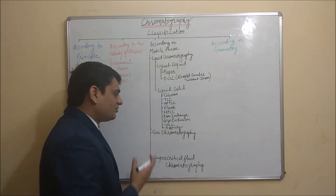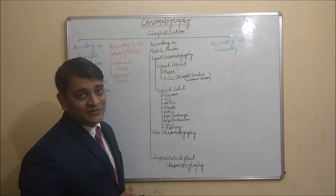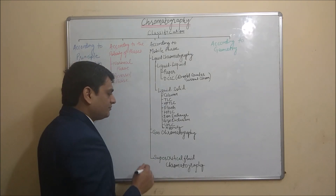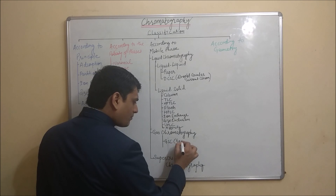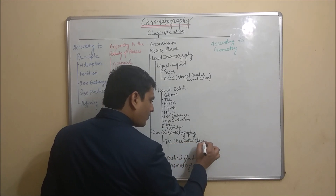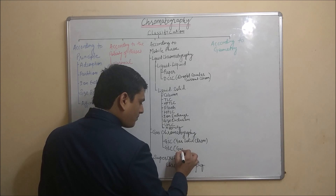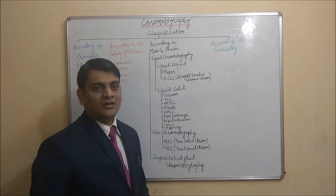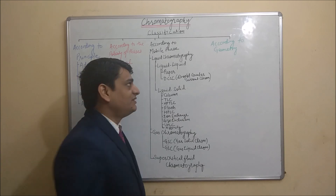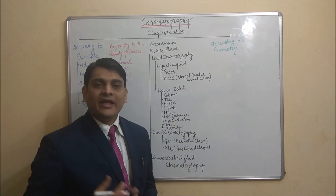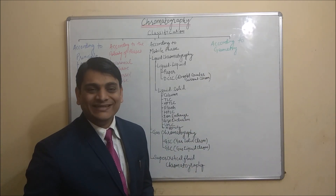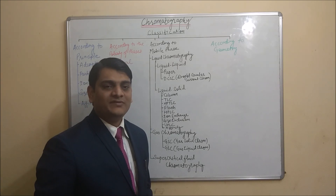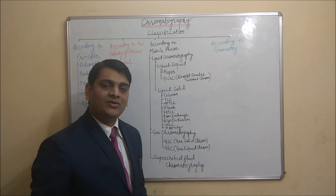Gas chromatography is divided into two categories: first one is GSC (gas-solid chromatography) and second one is GLC (gas-liquid chromatography). Now coming to the fourth category, which is according to the geometry. According to the geometry, chromatographic technique is divided into two categories: first is planar chromatography and second is column chromatography.